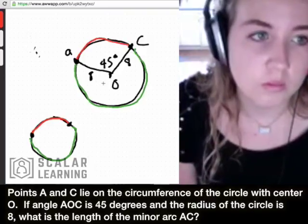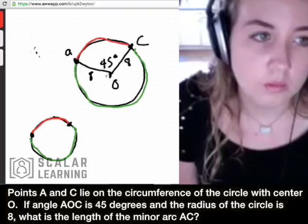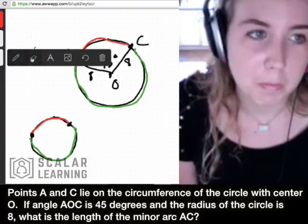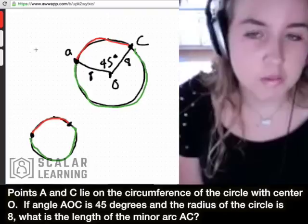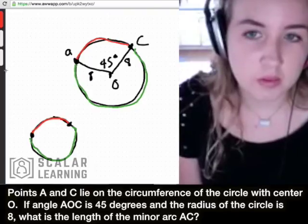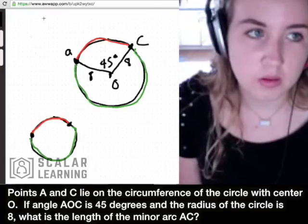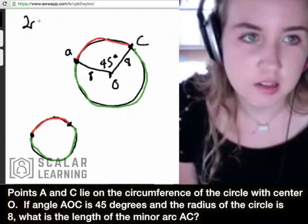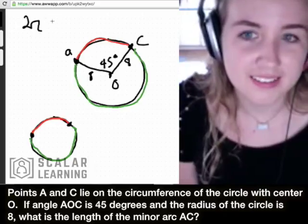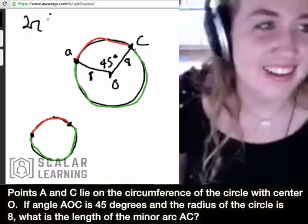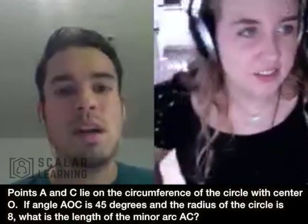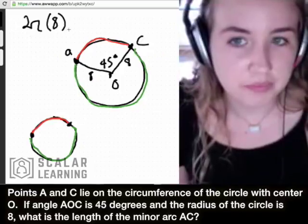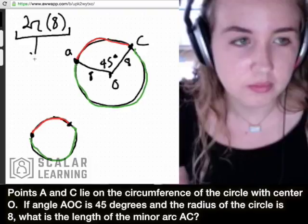So now we want to find the length of this minor arc. Anytime you think of length on a circle, you should be thinking circumference. So at a minimum, before we even find that value, let's just find the circumference. What's the formula for circumference of a circle? 2πr. Okay, so we've got 2π, what's your radius? Eight. Okay good, so we got 2π times 8. Usually they'll leave π in the answers, so all we got to do is multiply this out. What is the circumference of this circle?